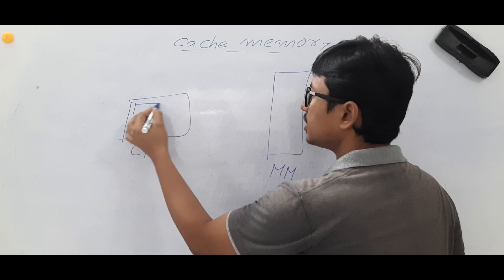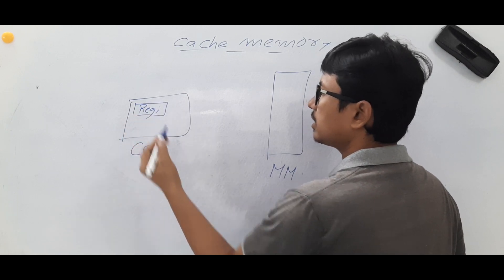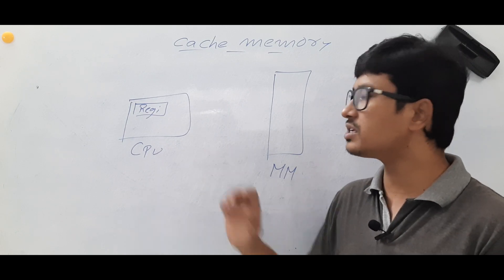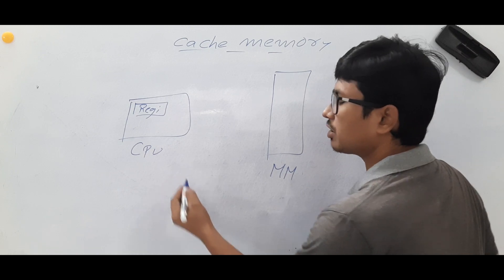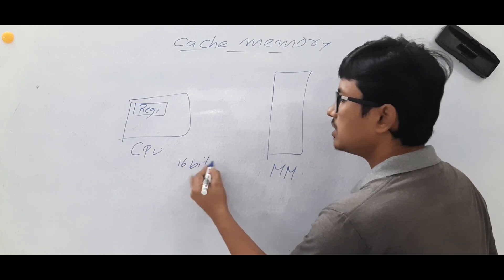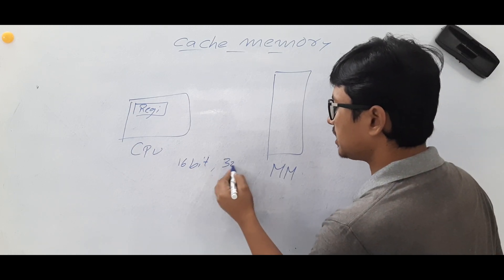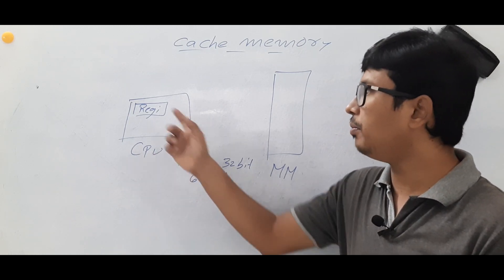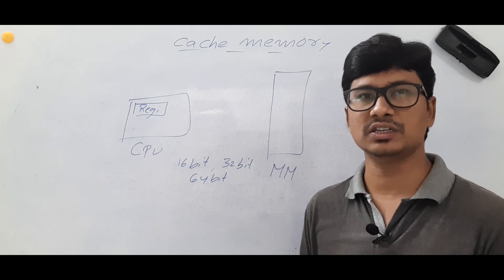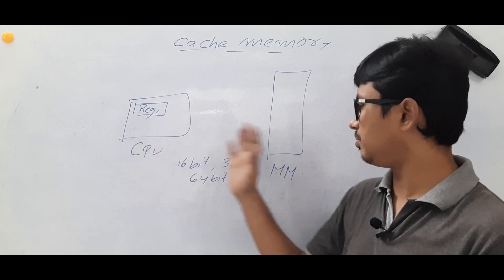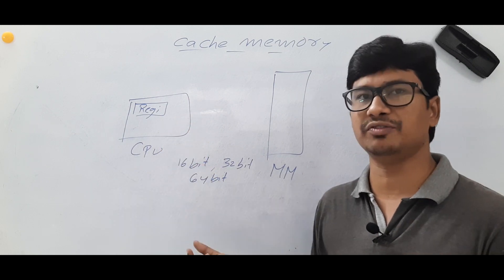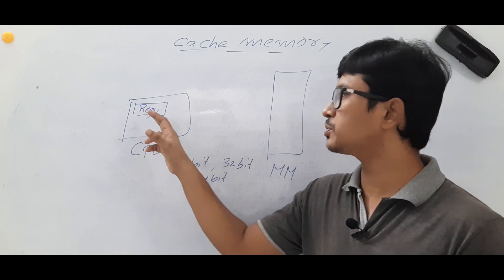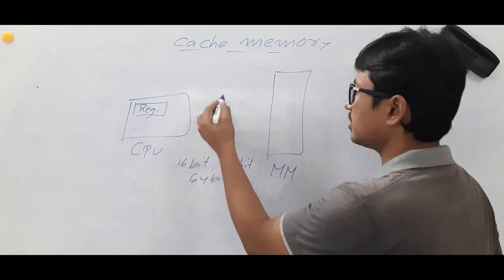One solution people found is registers. Registers are faster compared to main memory, but the problem is we can store very little information — 16 bits in a 16-bit register, 32 bits in a 32-bit register, and so on. Another problem is registers are very high cost per bit compared to main memory. So the two problems are less storage space and high cost.